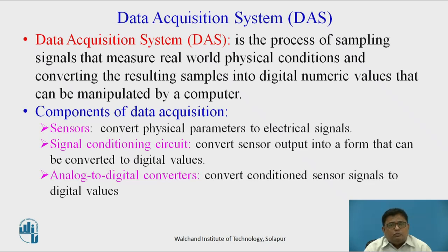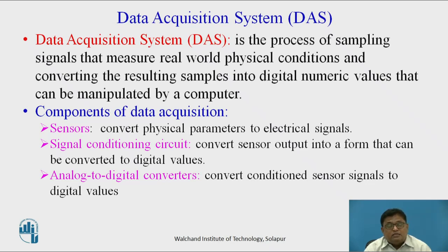The output of the temperature sensor is in the form of a change in resistance or something else. That change in resistance needs to be converted into voltage, mainly an analog voltage. Then the analog voltage needs to be converted into an equivalent digital value so that we can feed that value to the controller for processing.